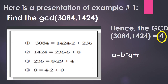Let's have example number one: find the GCD of 3084 and 1424. We will be using the statement A equals B times the quotient plus the remainder. So, A equals 3084 and B equals 1424. Step 1: we divide 3084 by 1424, giving quotient 2 and remainder 236. Step 2: the new A is 1424 and the new B is 236. So, 1424 divided by 236 gives quotient 6 with remainder 8.